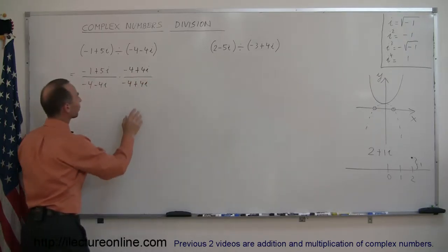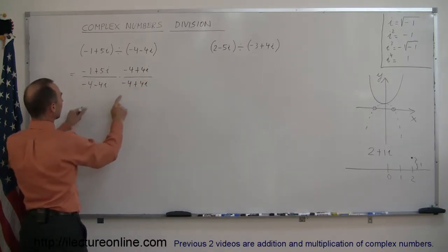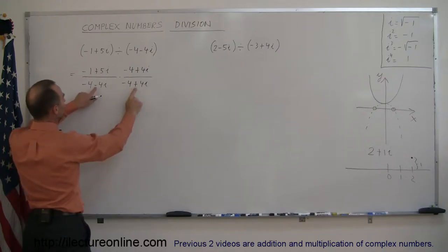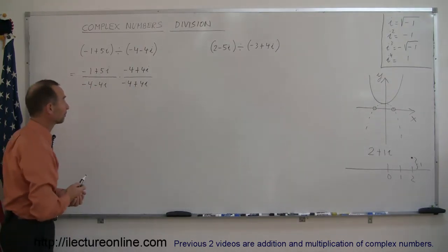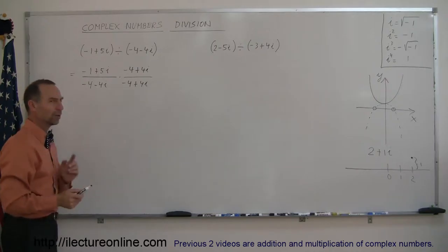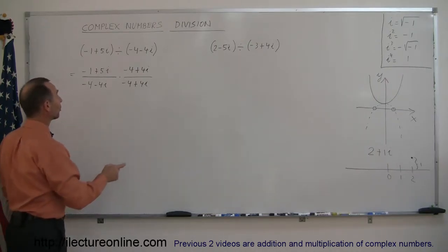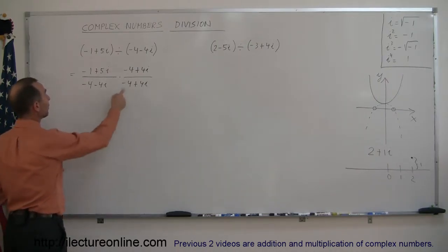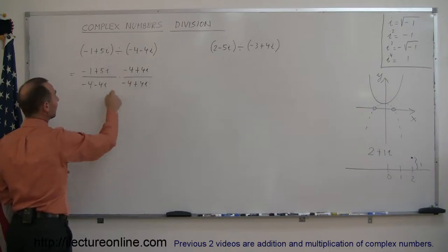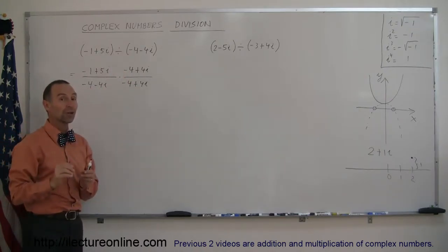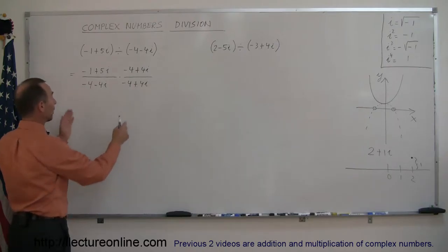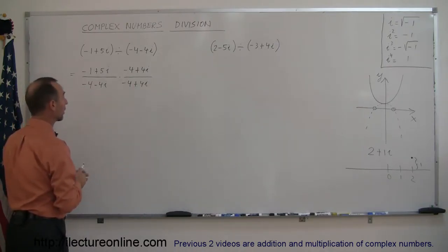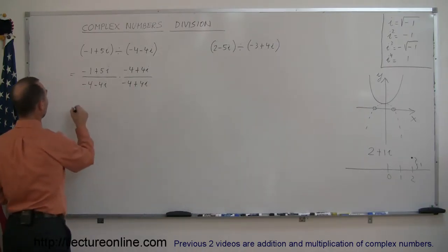That's called the conjugate of the denominator — the only thing that has changed is the sign of the imaginary part of the number. There's a reason why we do that: when we multiply the numerator together and the denominator together, the denominator will not have an imaginary part, and that's the whole idea. That's why we multiply the denominator by its conjugate.